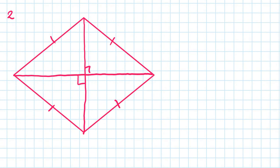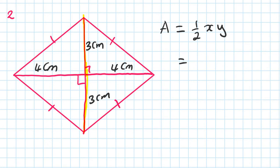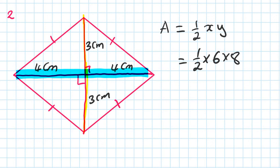For this rhombus, the length from one end to the other is 4 centimeters, so from the right angle to each end is 4 centimeters. The diagonals of a rhombus bisect each other, so if this half is 3 centimeters, the other half is also 3. Area of a rhombus is a half xy: a half times 6 times 8 — half of 8 is 4, times 6 is 24 centimeters squared.